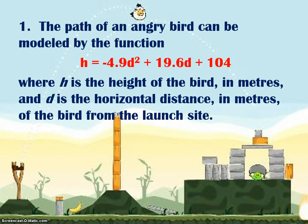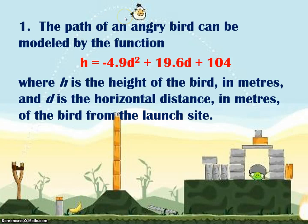The path of an angry bird can be modeled by a function, where h is the height of the bird in meters and d is the horizontal distance in meters. Essentially, you're going to put this bird in the slingshot, it's going to be shot into the air, and h represents the vertical distance, whereas d represents the horizontal distance from the slingshot to wherever the bird ends up.